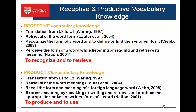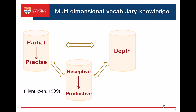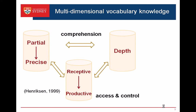Looking at previous definitions, they seem restricting in the form and meaning aspect of a word. But according to Henrikson's model, vocabulary knowledge is a more complex construct. She proposed that vocabulary knowledge contains three dimensions: the first is from partial to precise understanding of meaning; the second is the depth dimension, which refers to network building — words are believed to be stored as a network in the brain, and the more links between words, the deeper the vocabulary knowledge. These two dimensions relate to comprehension of word knowledge. The third dimension is receptive and productive vocabulary use, which relates to access and control of that comprehension.